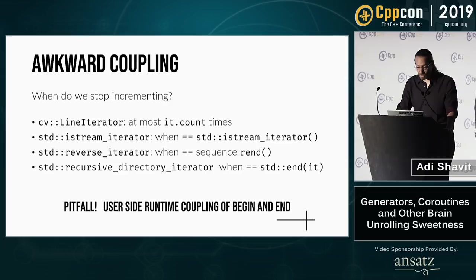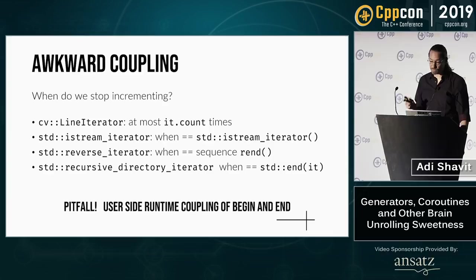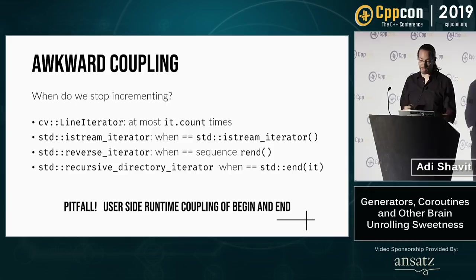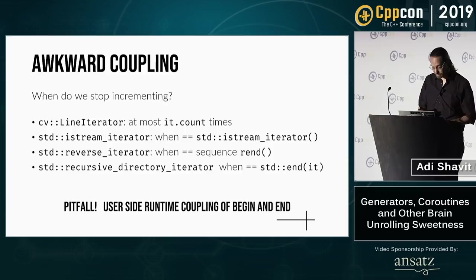The last two examples demonstrate one of the biggest drawbacks of iterator abstraction: the end iterator is tightly coupled at runtime to the begin iterator object. This is a major pitfall — when the end iterator is of the correct type but not created from the same sequence, passing such a pair to an STL algorithm will cause undefined behavior. In the worst case, your code will compile but you may have nasal daemons.